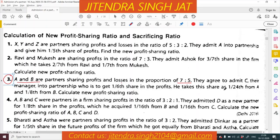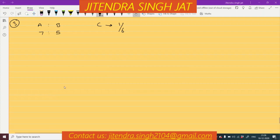He takes this share as 1/24 from A and 1/8 from B. C is taking 1/24 from A and 1/8 from B. This is the condition in this question.